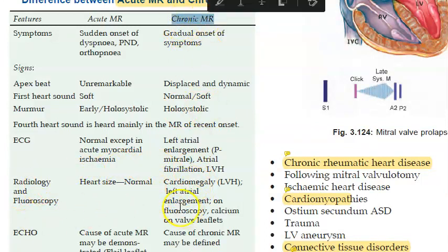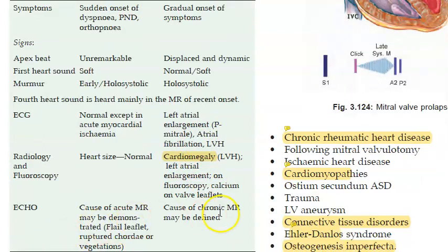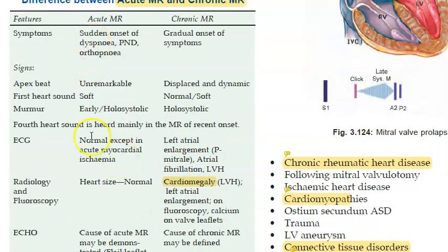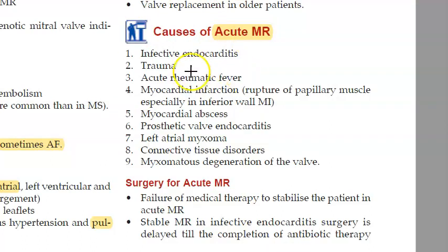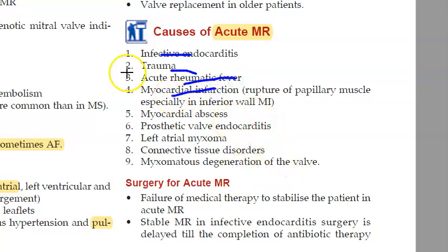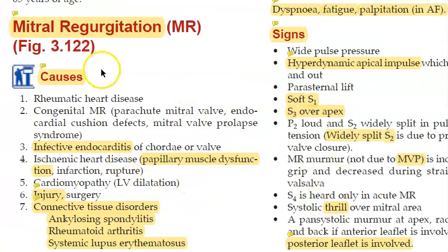In chronic MR there will be cardiomegaly, as the heart has adjusted to the regurgitation and become enlarged. But in acute MR the heart size is normal. Acute MR can happen due to infective endocarditis, trauma, acute rheumatic fever, or myocardial infarction — something sudden.